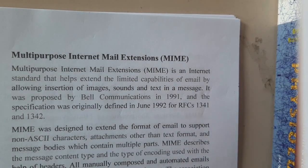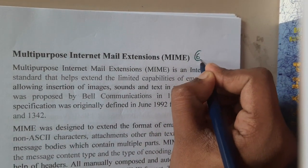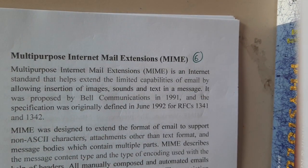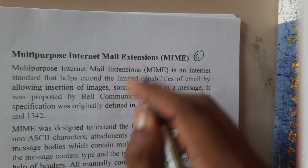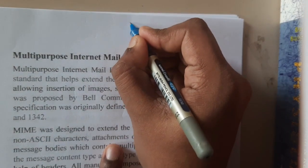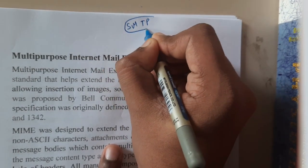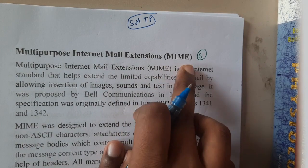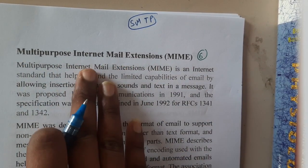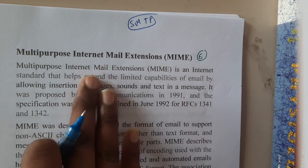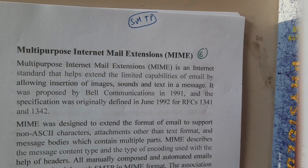In the next lecture we will be going through MIME - that is Multi-Purpose Internet Mail Extension. Whenever you hear the word mail, the only protocol we remember is SMTP. There are some drawbacks in SMTP, and that is the reason why MIME has come into existence. We will be discussing this in detail in the next lecture. Thank you, thanks for watching.